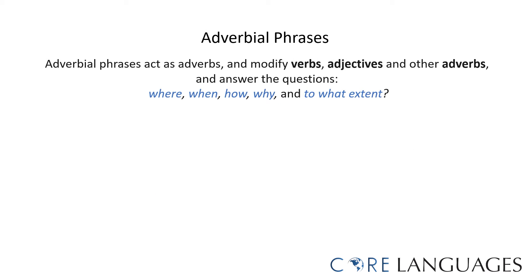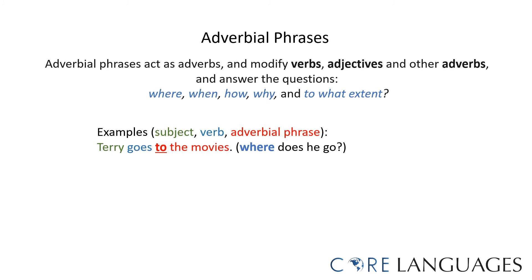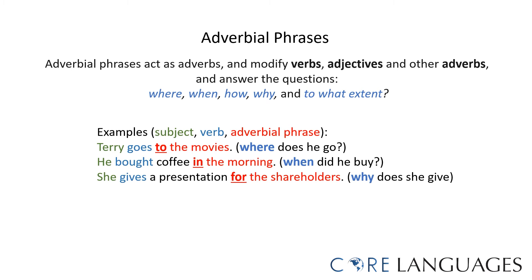Prepositional phrases that serve as adverbs and modify verbs, adjectives, and other adverbs are adverbial phrases, and they help us express where, when, how, why, or to what extent something is done. For example, Terry goes to the movies — where does he go? The preposition 'to' and the adverbial phrase 'to the movies' helps us indicate where Terry goes. He bought coffee in the morning — this adverbial phrase helps us express when he bought the coffee. She gives a presentation for the shareholders. The preposition 'for' and the adverbial phrase 'for the shareholders' helps express why she gives the presentation.